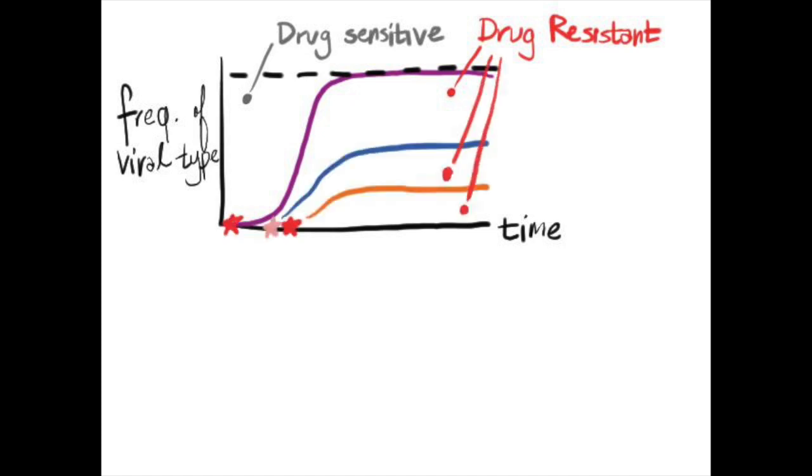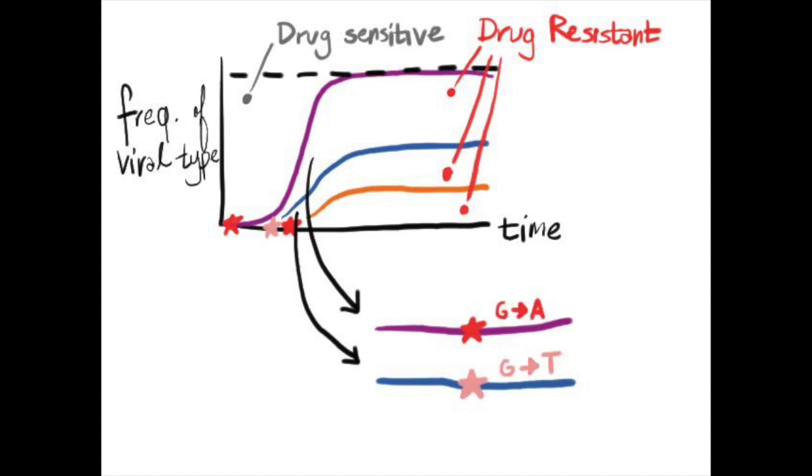We can tell that this happened because sometimes the mutations are coded differently, like an A in some viruses and a T in other viruses, and sometimes they are genetically linked to other mutations.